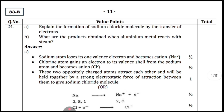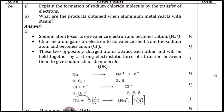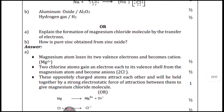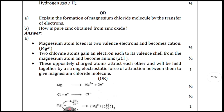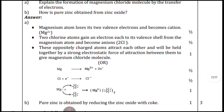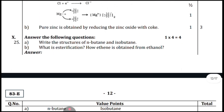Question twenty-four: explain the formation of sodium chloride molecule by the transfer of electrons. What is the product when aluminium metal reacts with steam? Here is a systematic answer. Also: explain the formation of magnesium chloride molecule by transfer of electrons, and how is pure zinc obtained from zinc oxide?